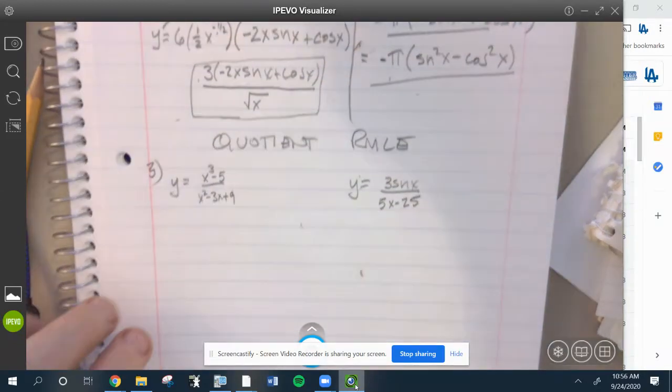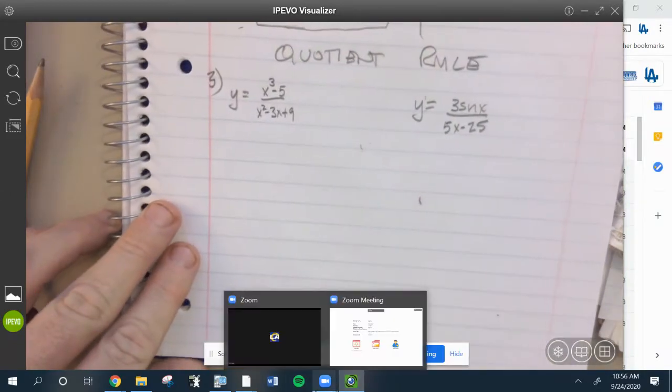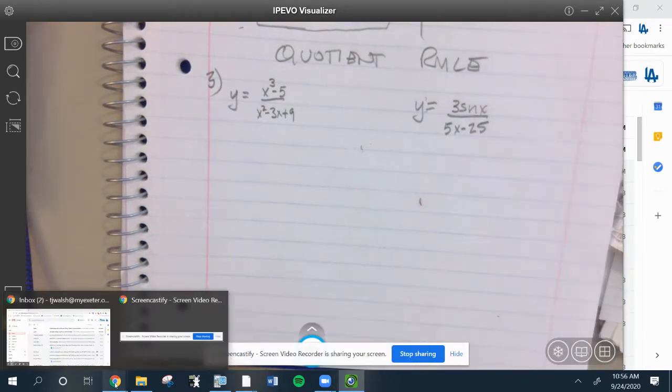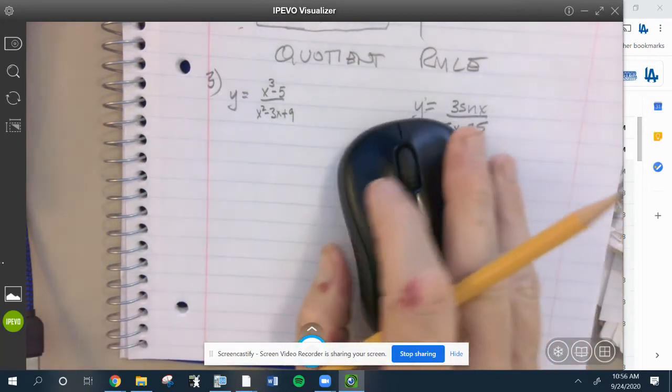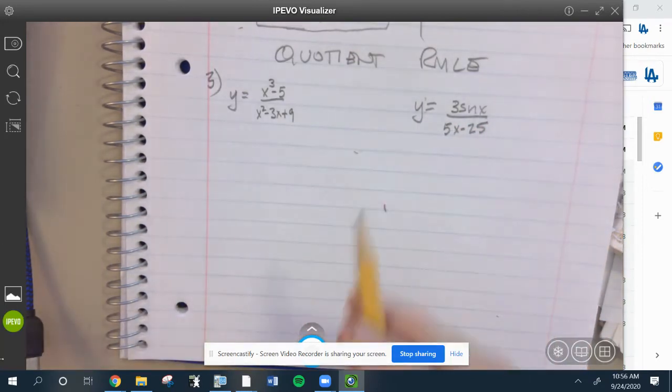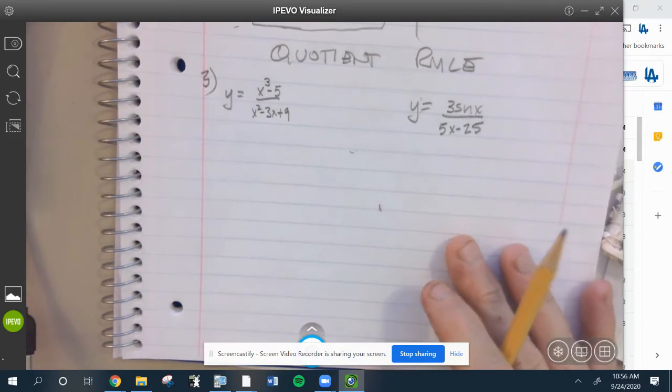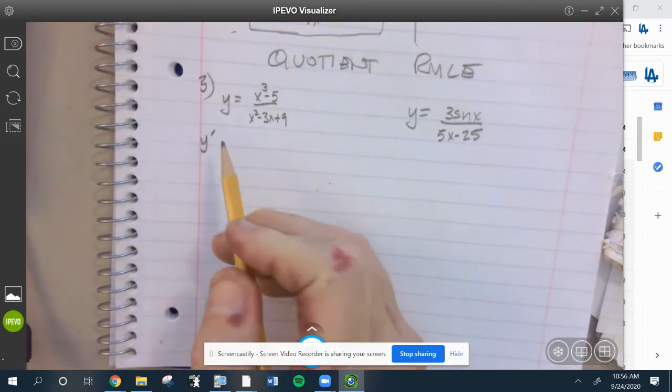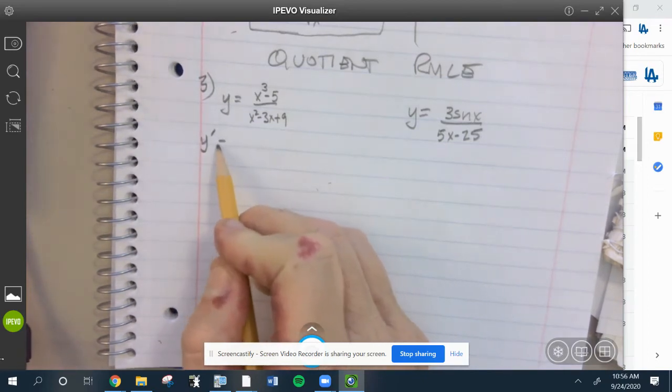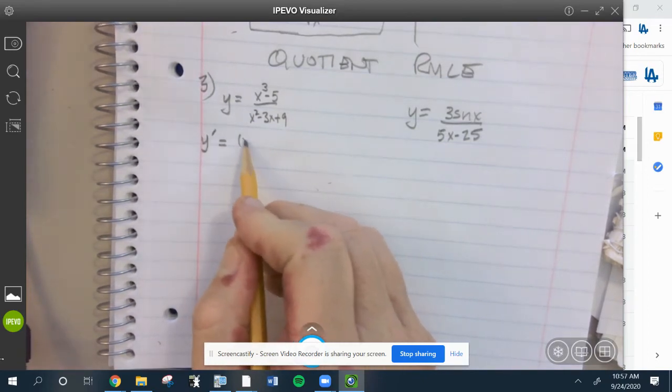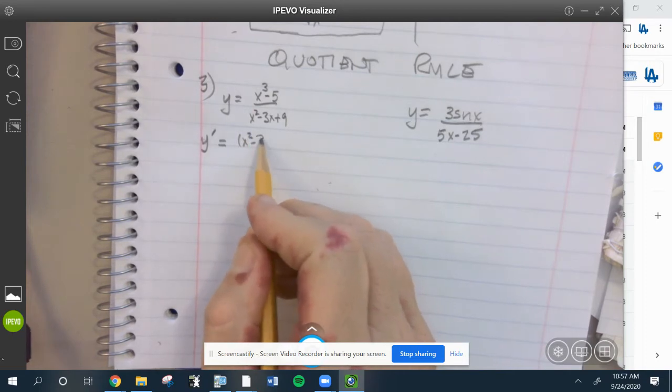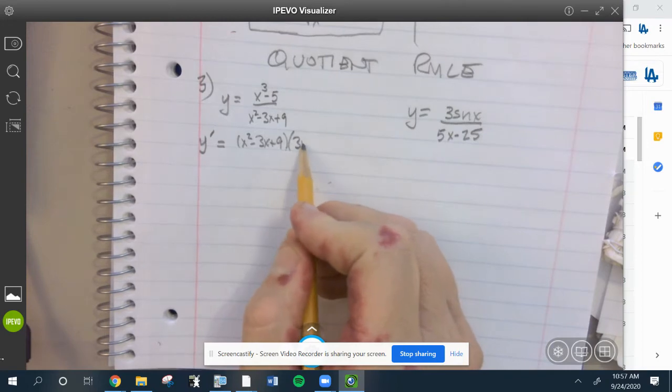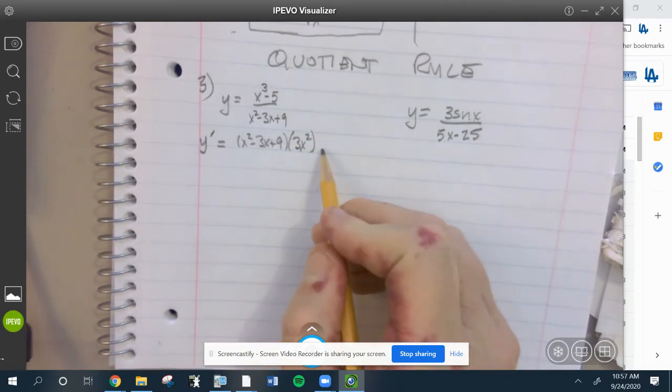Here are the quotient rule problems I want to show you. The first one is just a straight quotient rule. There's no constant multiples here. We're going to do the bottom times the derivative of the top minus the top times the derivative of the bottom.